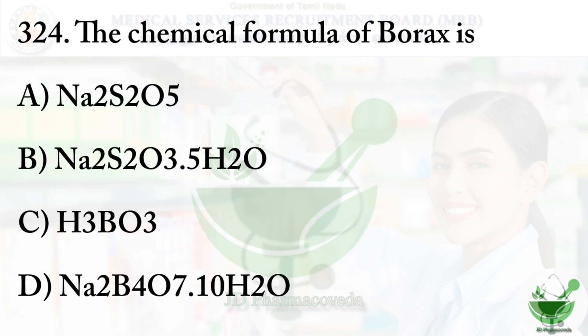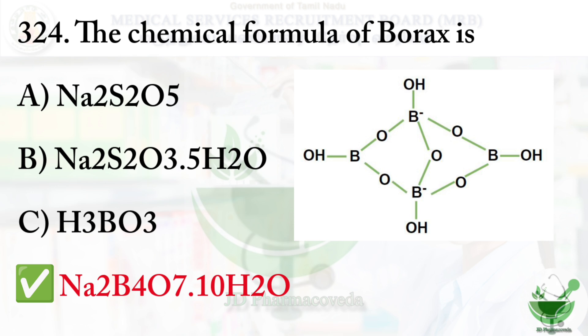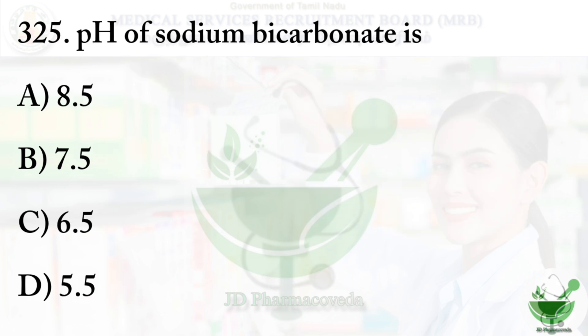Question number 324: The chemical formula of borax is? Option A: Na2S2O5, Option B: Na2S2O3·5H2O, Option C: H3BO3, Option D: Na2B4O7·10H2O. The correct answer is Option D, Na2B4O7·10H2O, sodium tetraborate decahydrate.